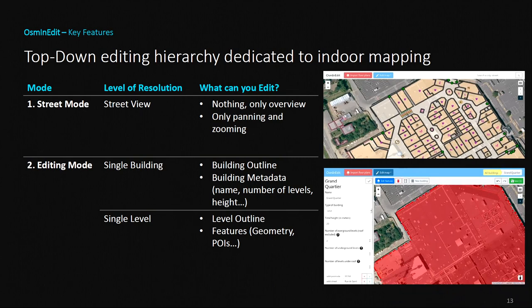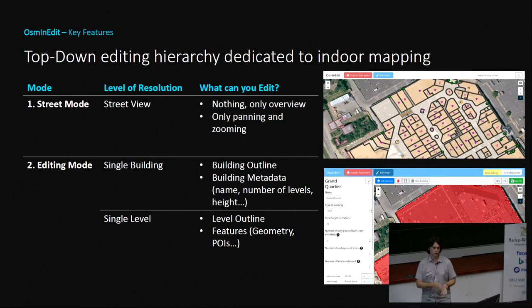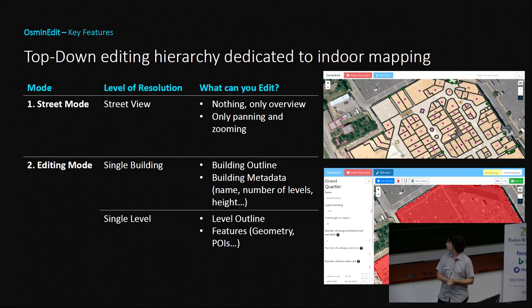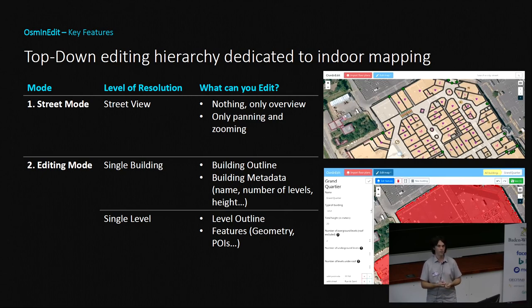The last key feature is a clear hierarchy in editing — you don't edit everything at once. You start with a street-mode view where you can browse the data level by level, similar to what viewers do. Then you go to editing mode, where you can edit the metadata of a single building, such as saying it has three levels. Then you can edit one level at a time, drawing the floor contour and adding features within that floor. You only see what you want to see on the map.